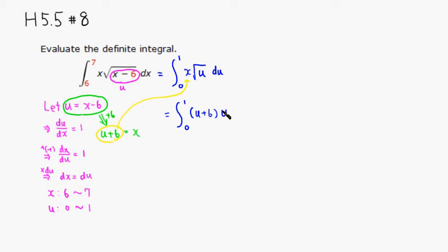So you end up getting integral from 0 to 1, then you have u plus 6 times square root of u. I don't like square root, I'm going to write 1 half power du. Then I'm going to distribute this guy to u and 6. We get this integral from 0 to 1: u times u to the 1 half is u to the 3 halves, and 6 times u to the 1 half power.